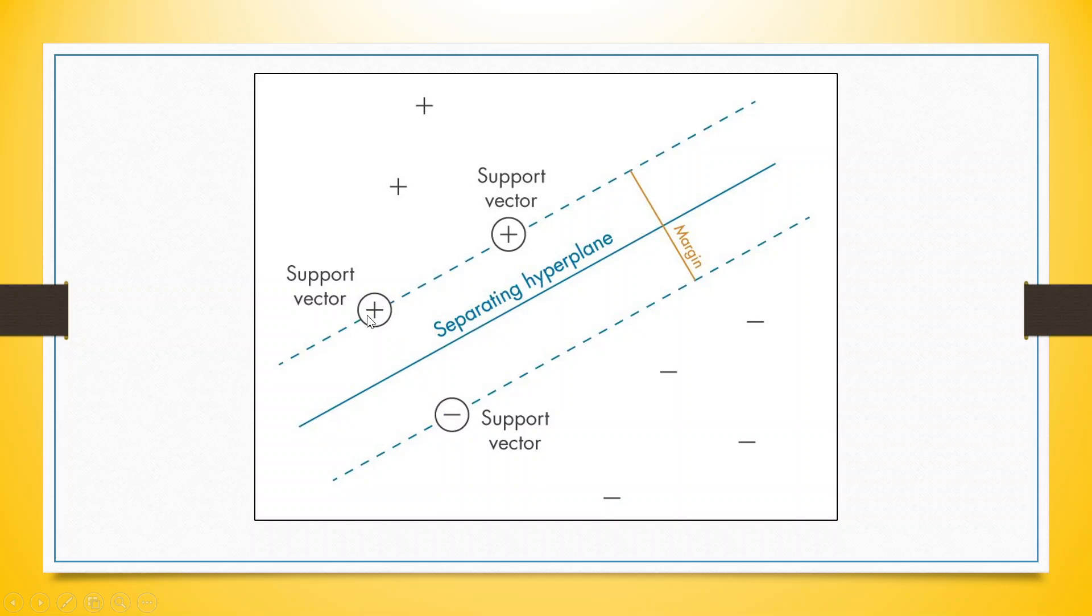So the distance between the nearest plus and minus is known as a margin. The plane which is separating these two classes is known as a separating hyperplane. And the observations used in both the classes are known as support vectors. How we can run this, let's see in KNIME.